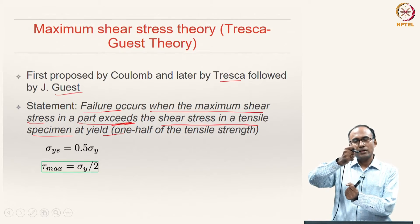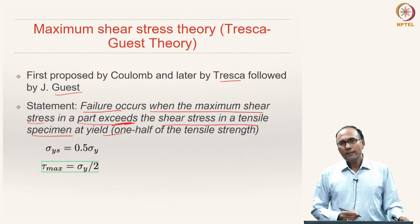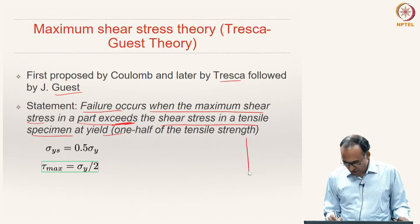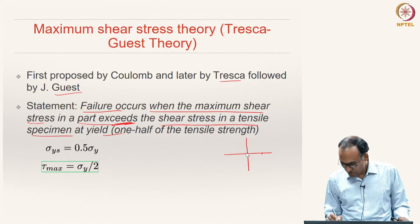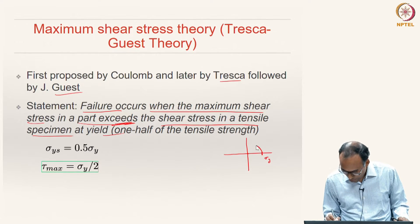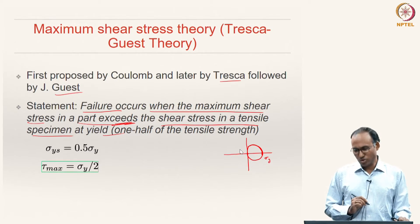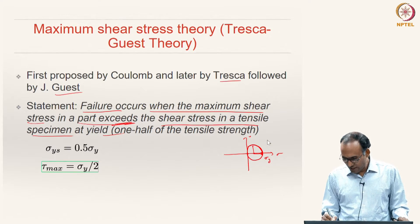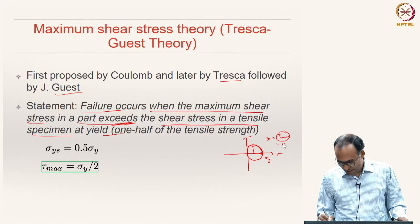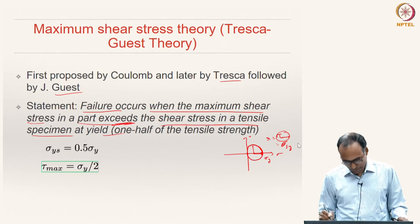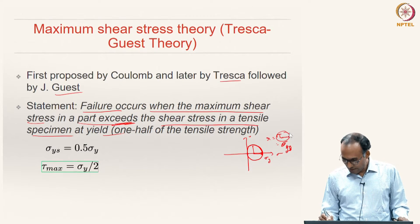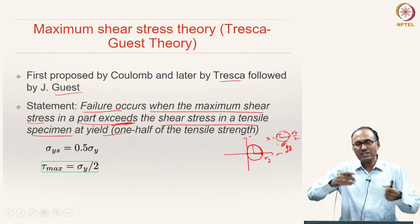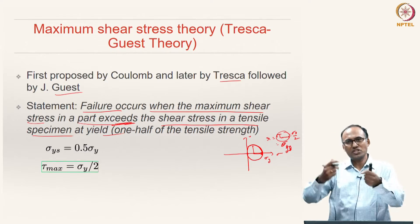When you are using a uniaxial tension test, how does the Mohr's circle look? Sigma 1 is equal to sigma_y at the yield strength and sigma 2, sigma 3 are 0. The radius of the Mohr's circle equals tau_max, and since this tau_max corresponds to yielding, we call it the shear yield strength, tau_sy, which equals sigma_y divided by 2. Whatever is the normal yield strength, one half of that will be your shear yield strength.